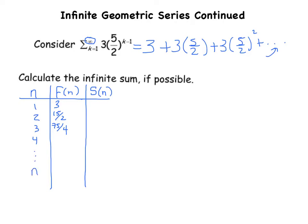The nth term is actually very easy to determine when the expression is given in sigma notation, because the closed form is right inside. So this is 3 times 5 halves — and since it's an n, I'm inputting n instead of k — to the n minus 1.